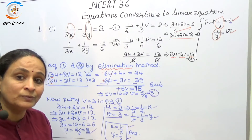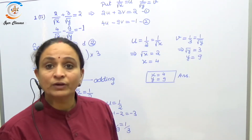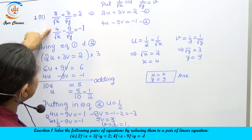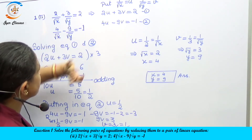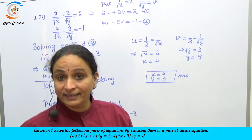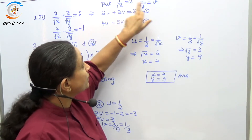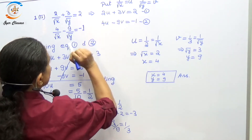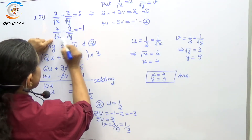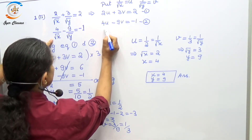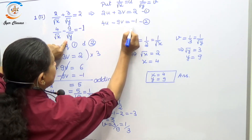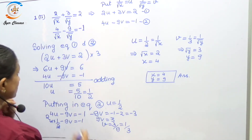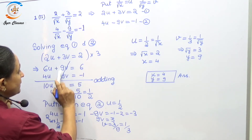In the second question: 2/√x + 3/√y = 12 and 4/√x − 9/√y = −1. To convert, we substitute 1/√x = u and 1/√y = v. The first equation becomes 2u + 3v = 2 (equation 1) and the second becomes 4u − 9v = −1 (equation 2).